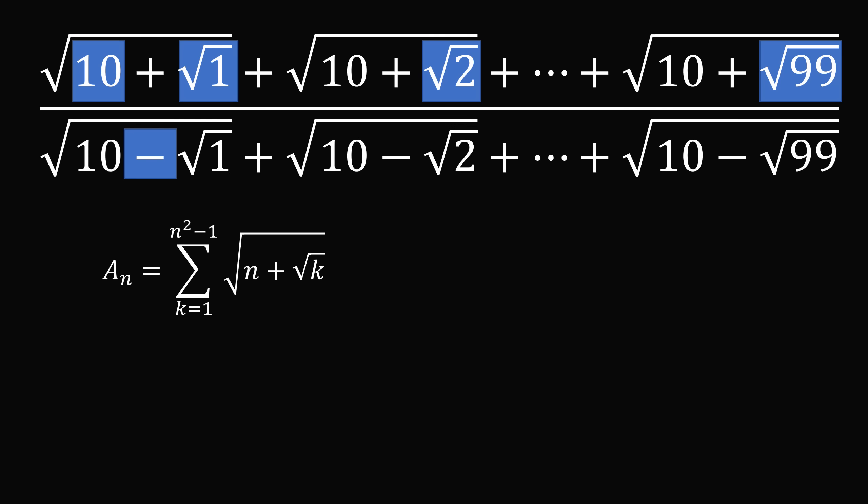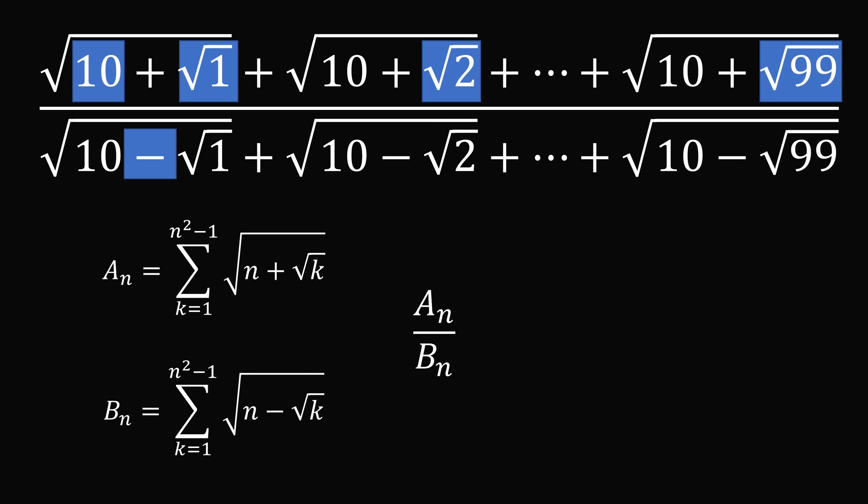In our particular problem, n is equal to 10. The denominator can be written as b_n, which is the sum from k equals 1 to n squared minus 1 of the square root of n minus the square root of k. We are looking to simplify the ratio a_n over b_n.